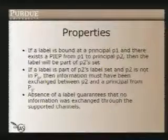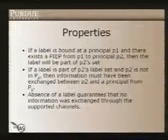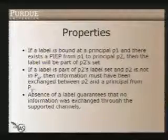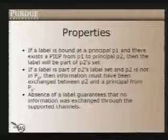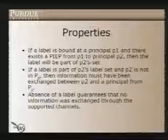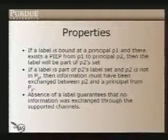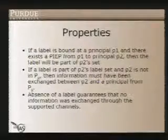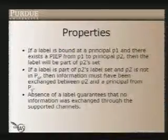Given these extensions to the model, I can give you two properties — the third bullet is a direct consequence. First: if a label is bound at principle p1 and there exists a potential information exchange path from p1 to p2, then the label will be present as part of p2's label set. Second: if you find a label at p2 and p2 is not a principle that could have generated this label itself,